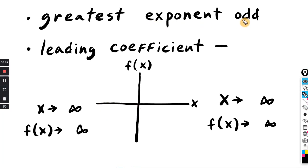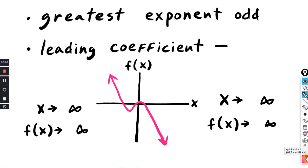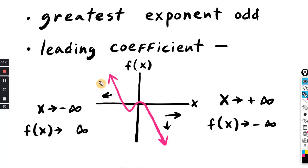Last case: greatest exponent is odd and leading coefficient is negative. The graph now goes down to the right and up to the left. As x travels to the right — positive infinity — f of x travels down, so f of x goes to negative infinity. On the other side, as x goes to the left toward negative infinity, f of x travels up, so that's positive infinity. That is the case for greatest exponent odd and leading coefficient negative.